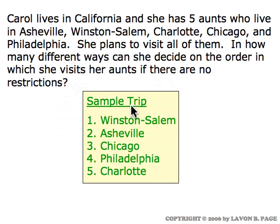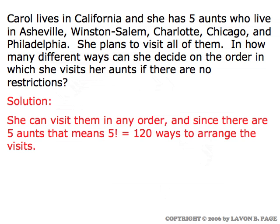A sample trip, for example, would be a visit to the aunt in Winston-Salem, followed by Asheville, Chicago, Philadelphia, and Charlotte. If there are no restrictions, since we have five aunts living in five different cities, it's simply a question of how many different ways we can arrange those cities in a specified order. Five cities means we're looking at five factorial — counting the permutations of five objects. Five factorial is 120, so there would be 120 ways to arrange the visits.